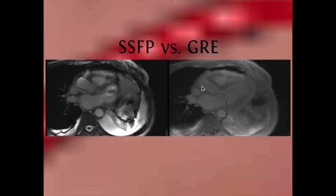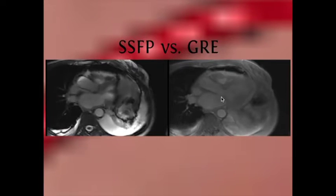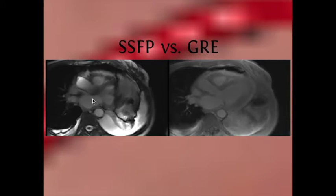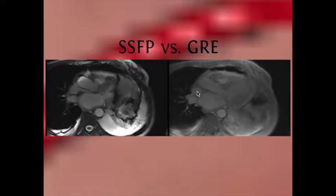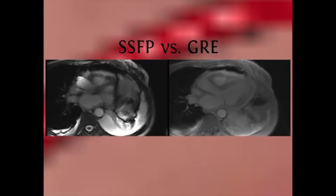Another strategy is to switch to gradient echo — we see none of the banding artifact. However, there's no free lunch in cardiac MR: we give up temporal resolution because of the crusher gradient at the end of each TR. If we're at 50 ms temporal resolution with SSFP, switching to GRE alone would jump temporal resolution to about 70–80 ms. To compensate, we decrease spatial resolution or decrease the number of segments acquired per TR.